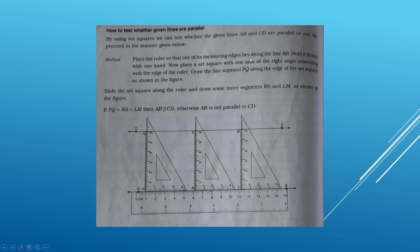Method: Place the ruler so that one of its measuring edges lies along the line AB. Hold the ruler firmly with one hand. Now place the set square such that one arm of the right angle coincides with the edge of the ruler. The set square is in the shape of a right angle — it has one arm along the ruler.